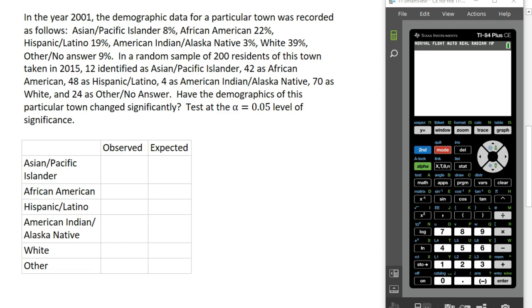We took a random sample of 200 residents in this town in 2015, and we have the following counts: 12 identified as Asian Pacific Islander, 42 African American, 48 Hispanic Latino, 4 American Indian Alaska Native, 70 White, and 24 as other or chose not to answer. What we're trying to do in this test is determine whether the demographics have changed significantly.